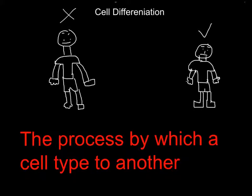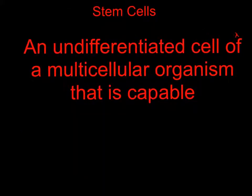The definition of cell differentiation is the process by which a cell changes type to another. An undifferentiated cell of a multicellular organism that is capable. That is the definition of stem cells.